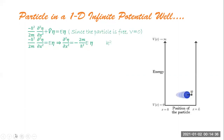The vertical axis is the energy and the horizontal axis is the position of the particle. We have a particle of mass m inside the well whose boundaries are of infinite height. This implies the particle is confined within the region from x = 0 to x = L, which is the width of the well — the particle cannot be outside.